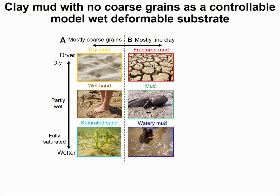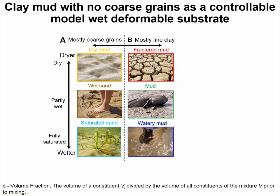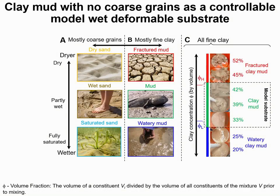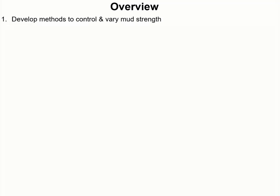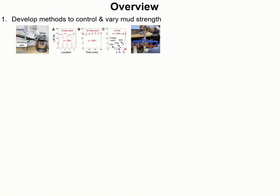To do so, it is important to control the mud strength because it affects how much the animal sinks in and how easy it is for the mud to stick to it. This is difficult for natural mud because it is mostly made up of fine clay but still has some coarse grains, and hence its strength is a function of not only the solid volume fraction but also the percentage of fine clay amongst the solid particles. Here we choose clay mud with no coarse grain since it behaves quantitatively similar to natural mud but its strength is only a function of the solid volume fraction. In this talk, I will first discuss the development of different methods used to control and characterize the mud strength.